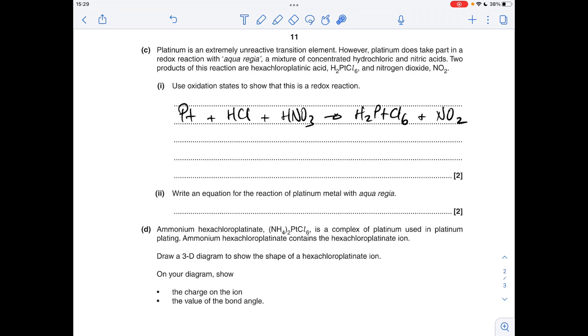Moving on to part C, we've got some information about platinum being very unreactive, but it does react with this mixture of acids called aqua regia. And we're told two products of the reaction are this substance here and nitrogen dioxide. And we've got to show that this is a redox reaction using oxidation states. So we'll just do the usual thing, look at oxidation states of atoms before and after the reaction, and see where the changes are.